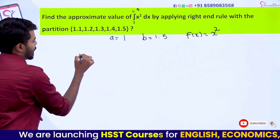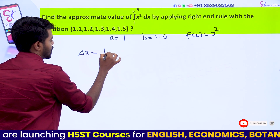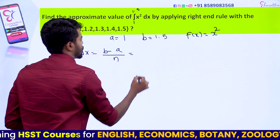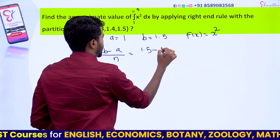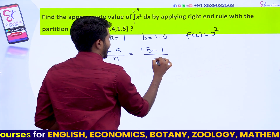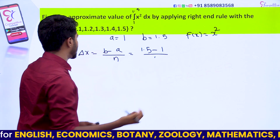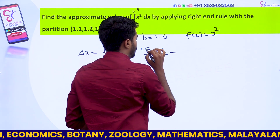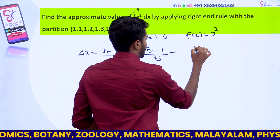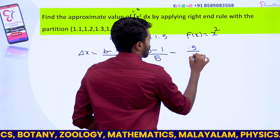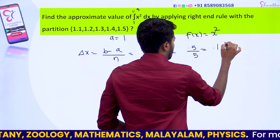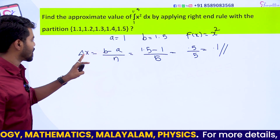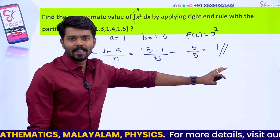Delta x is equal to b minus a divided by n, that is 1.5 minus 1 divided by n. The number of partitions is 5. So 1.5 minus 1 equals 0.5, and 0.5 divided by 5 equals 0.1. Delta x equals 0.1.